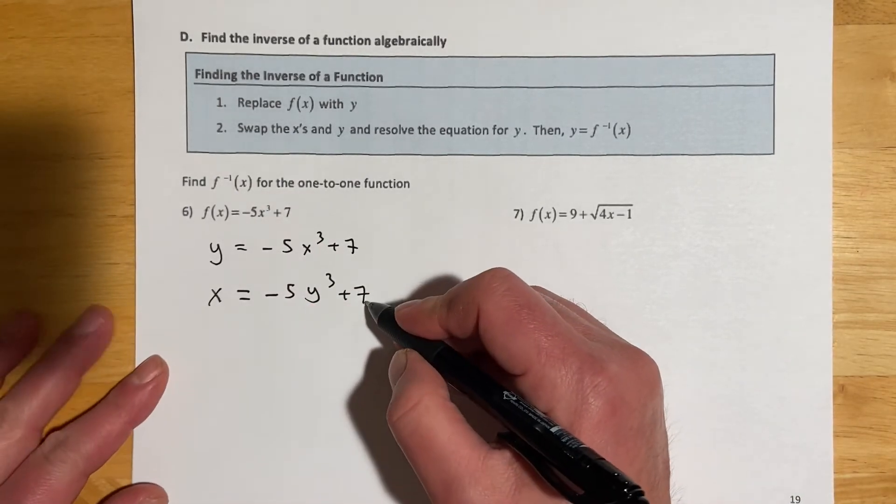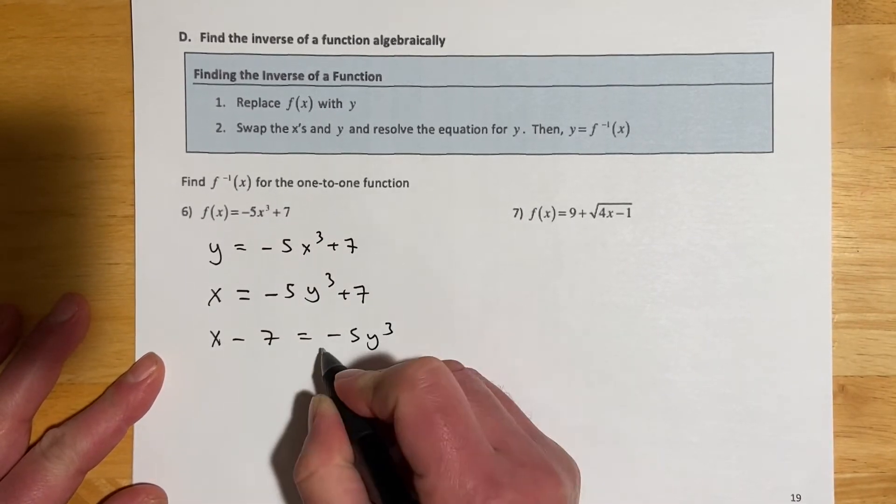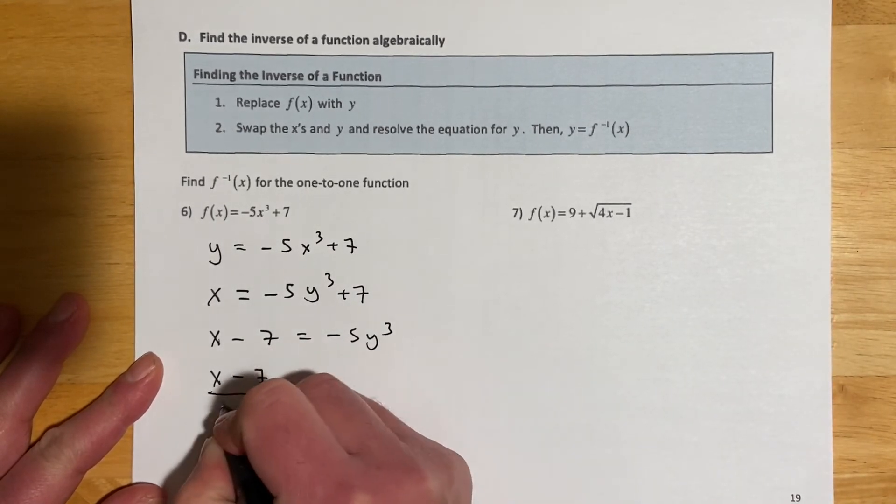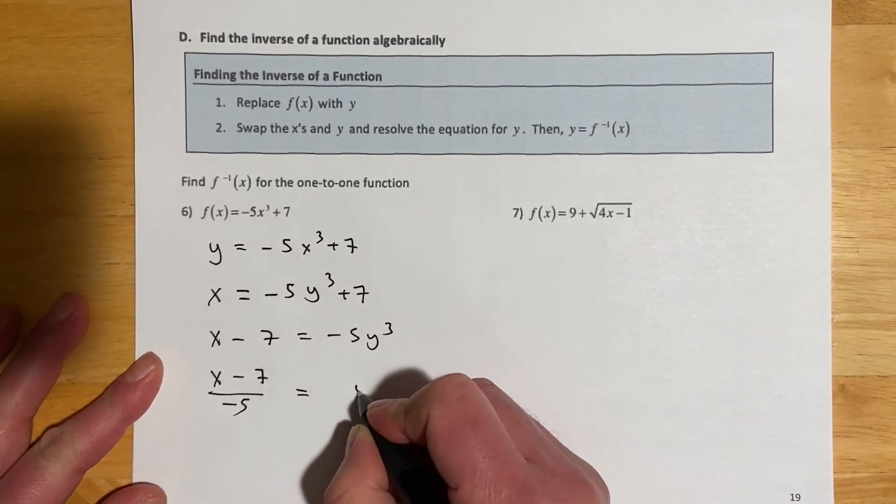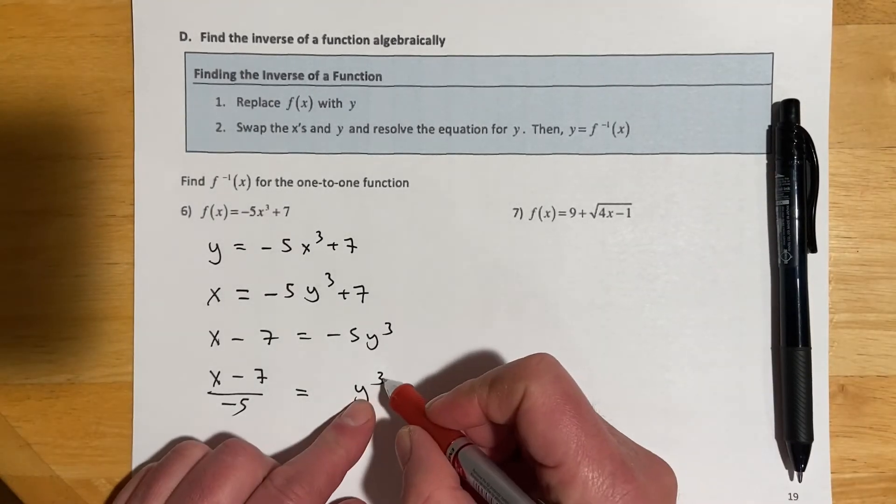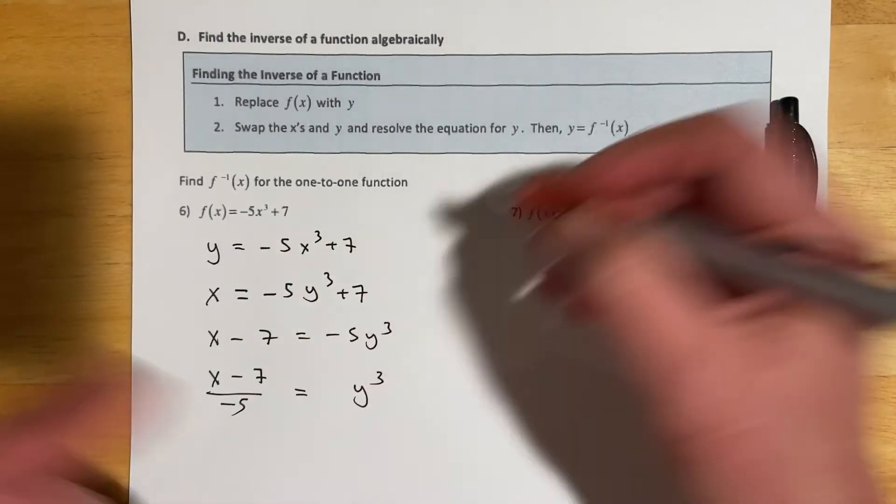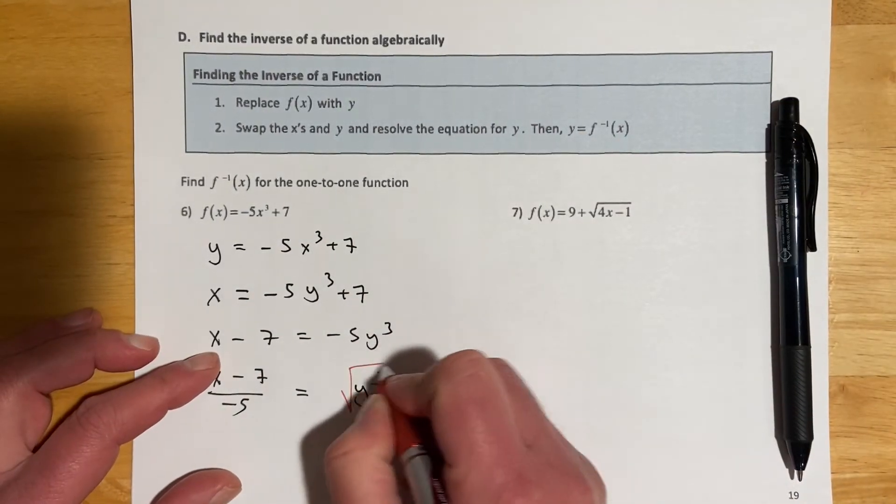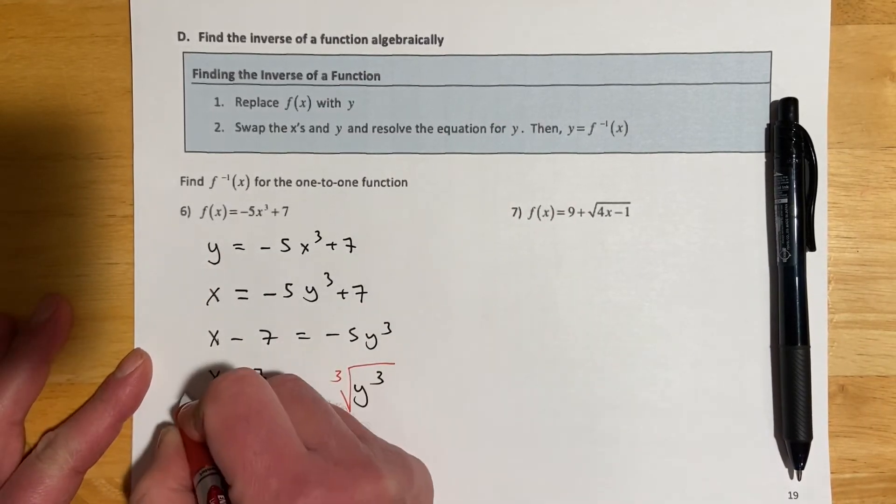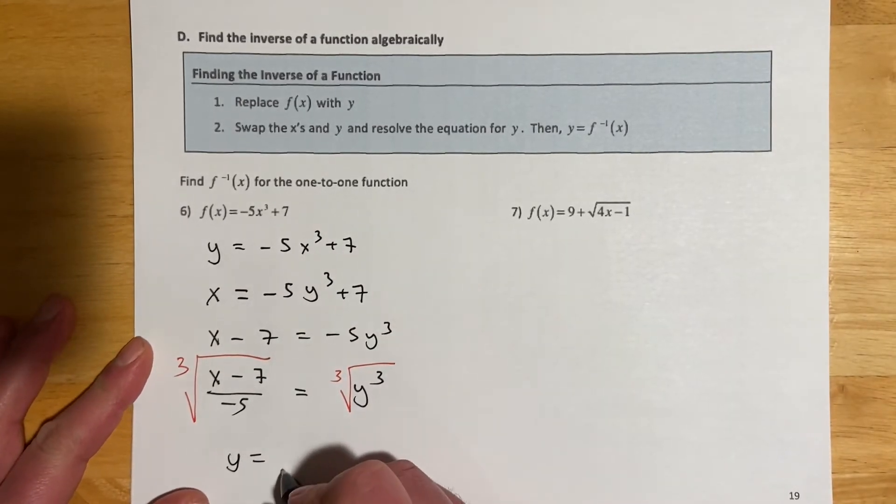We will subtract our 7 over, divide both sides by negative 5. And then from there, since this is raised to the 3rd, we'll take a cube root. If that was raised to the 7th, we'd take a 7th root. We just undo powers with roots, and that's because they're inverse to one another. And so then that would be our inverse.